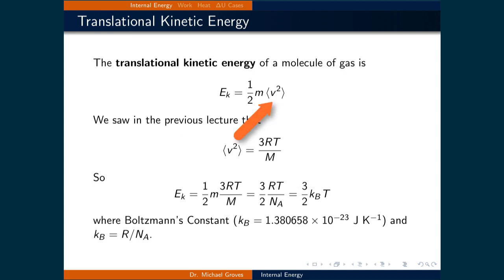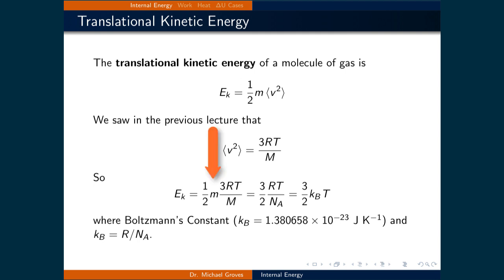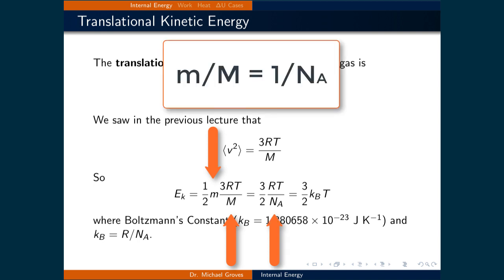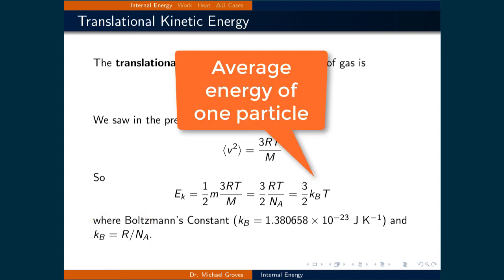Substituting that into the expression for kinetic energy gives three-halves times the Boltzmann constant times the temperature, where the Boltzmann constant k_b is equal to 1.380658 times 10 to the minus 23 joules per Kelvin. In this calculation, we use the fact that the mass of a particle divided by its molar mass is equal to 1 over Avogadro's number, and that the Boltzmann constant is equal to the gas constant divided by Avogadro's number. This expression gives us the average energy of one particle in a gas.